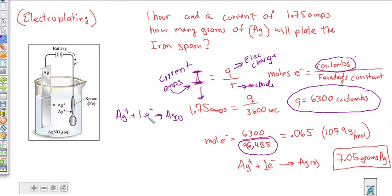So Ag plus one electron goes to Ag solid. So if it was two, like iron, we look at iron, iron is actually two electrons. But we're not, we're transferring the silver right here. So it's a one to one ratio. So 0.065 moles of iron is going to be the same as the moles of electrons. So we multiply the moles of electrons times the molar mass of iron, which is 107.9 grams per mole. And we find out that we have a total of 7.05 grams of silver. And so that is the total amount of silver that's going to coat the spoon right here.